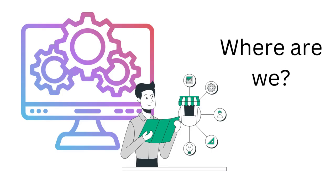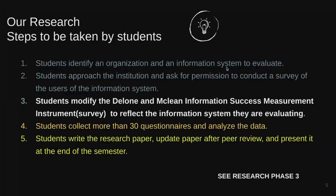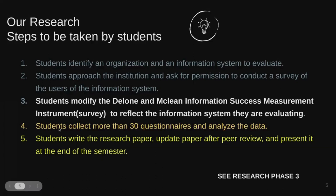By now you should have identified an organization that has an information system you can evaluate — most of you have done this, so congratulations. Additionally, you should have approached an institution and asked for permission to conduct a survey of the users of the information system. We are now modifying the DeLone and McLean information success measuring instrument to reflect the information systems being evaluated. We expect you to collect more than 30 questionnaires, or 80 percent of total staff if the organization has fewer employees.